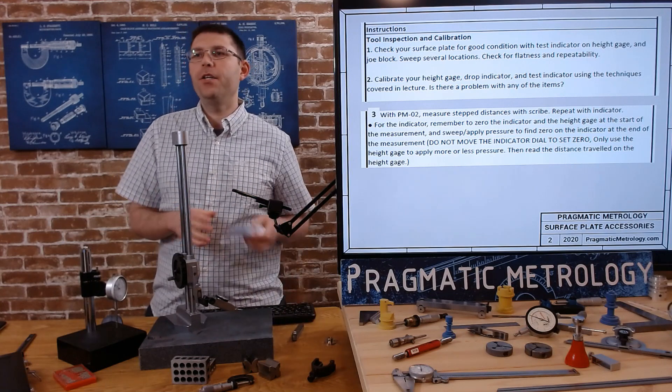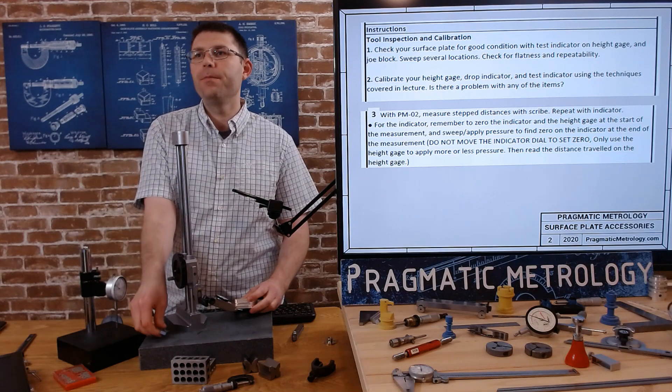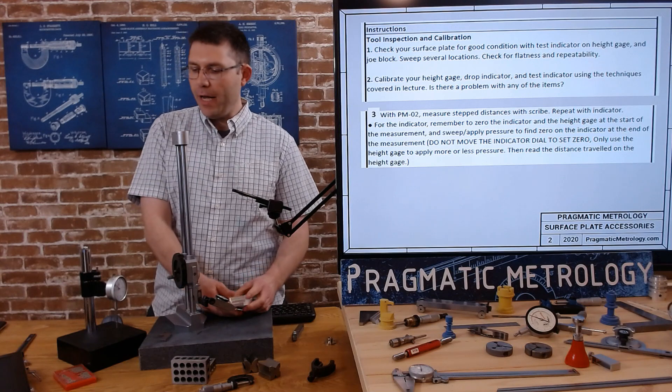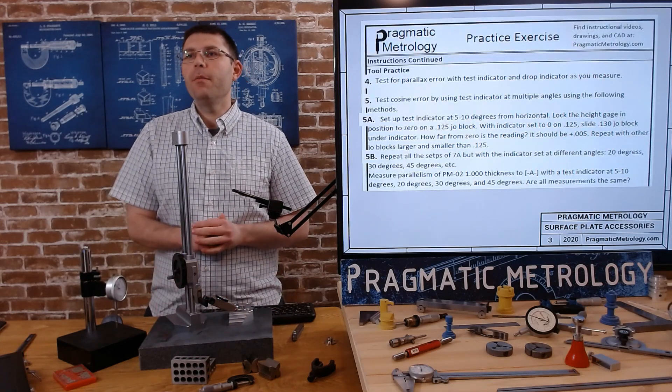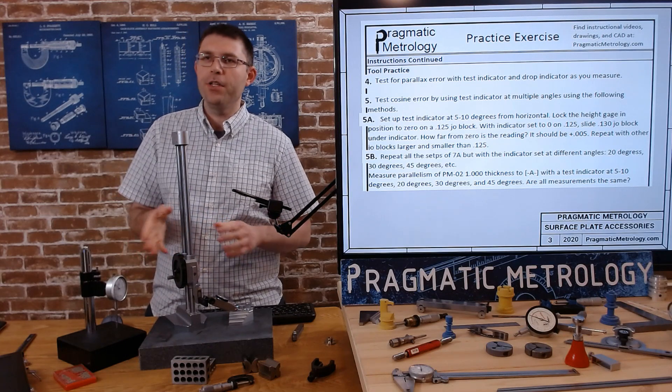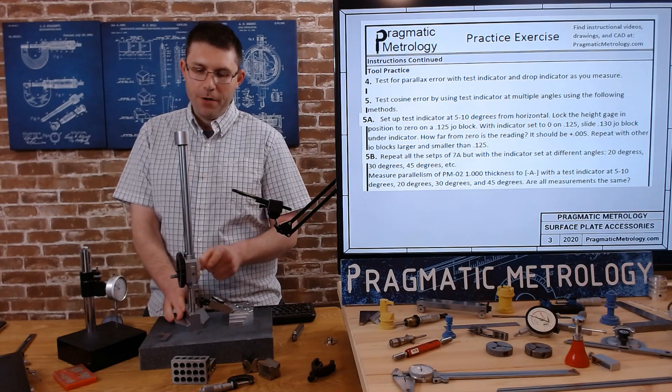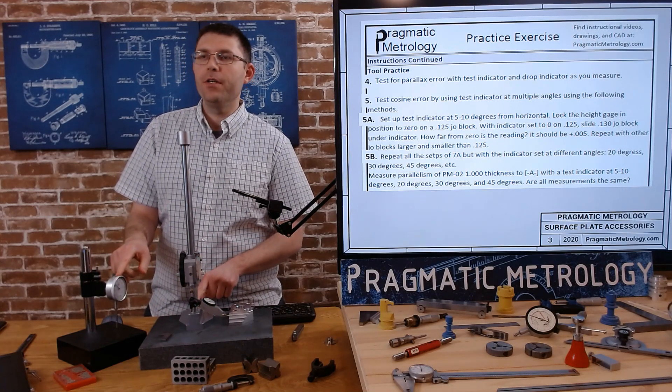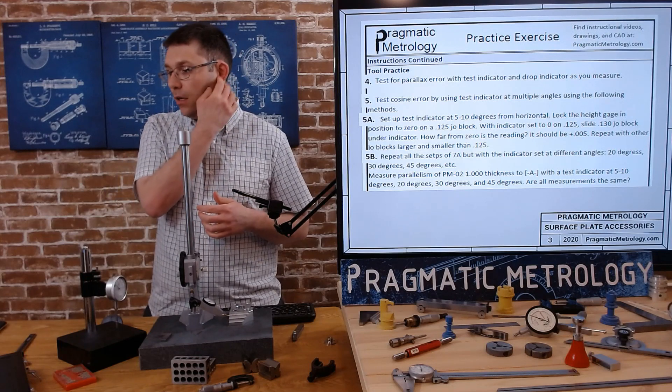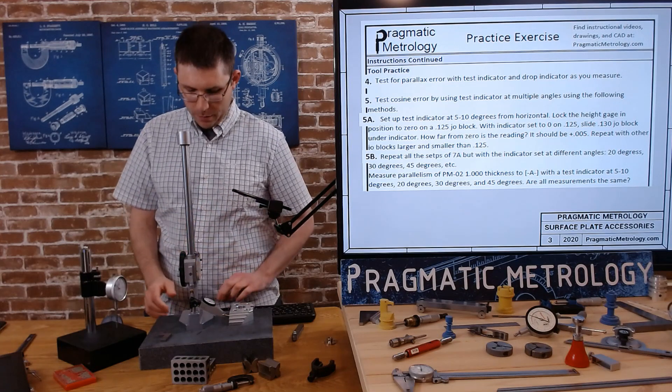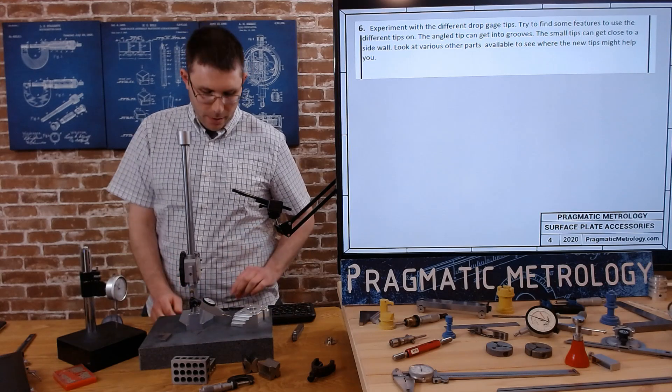Make sure you practice it. You should get in the habit of checking your equipment periodically. Third one, with the angle block here we're gonna measure the distances with the steps with a scribe and with an indicator, and then I'm gonna do it again with a drop indicator as well. Number four, we're gonna test for parallax error with the test indicator and the drop indicator as you're using them. Number five, test for cosine error by using the test indicator at multiple angles. And then number six, when we measure our steps let's experiment with a few different tips and see what happens.